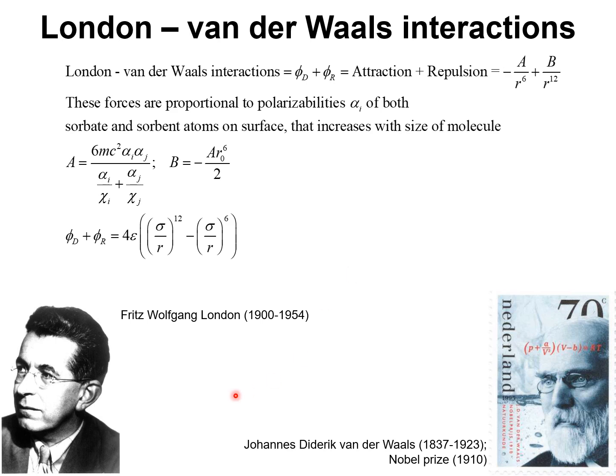It is interesting to note that despite what the name London might suggest, Fritz Wolfgang London was actually a German. Johannes Diderik van der Waals won the Nobel Prize in 1910 and he was a professor at the University of Amsterdam where I am also located.